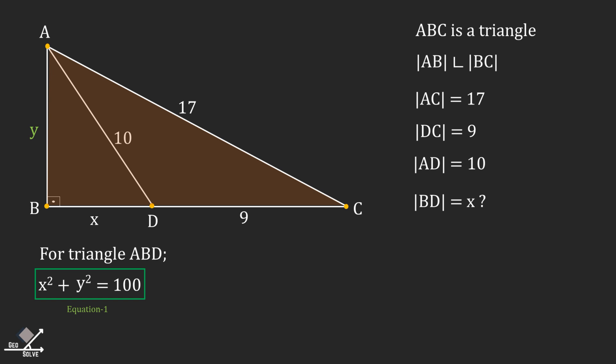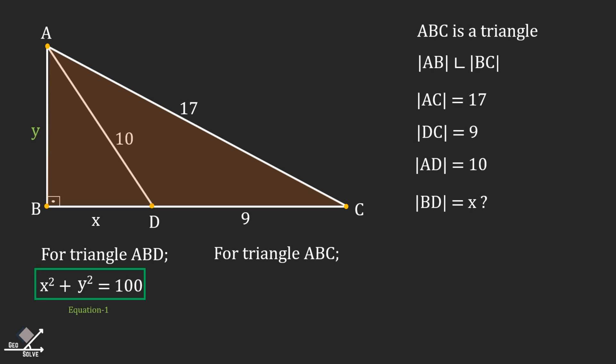Now let's consider the larger shaded triangle. This is also a right angle triangle, so we can again use Pythagorean theorem to have an equation relating x and y. For triangle ABC, y squared plus (x plus 9) squared equals 17 squared.